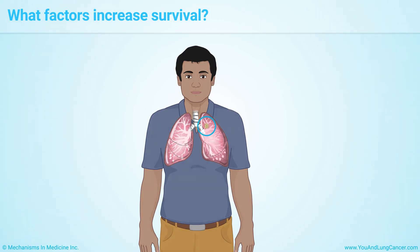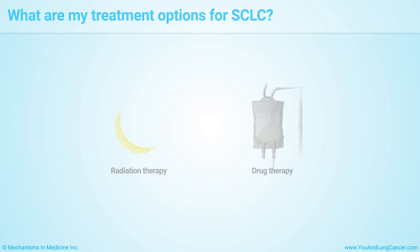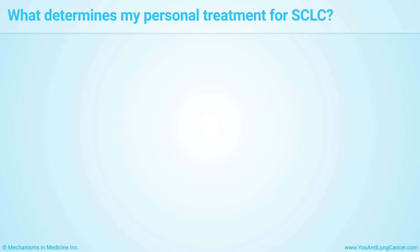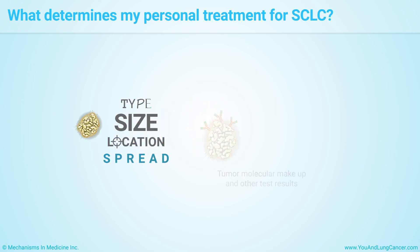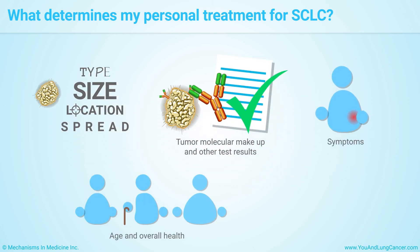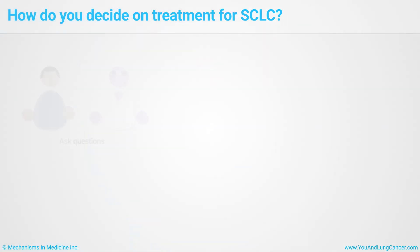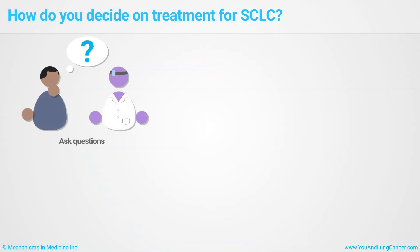Having a small cancer that hasn't spread outside the lung increases survival. The main ways to treat people with small cell lung cancer are radiation therapy and drug therapy. Which options are best for you will depend on factors like your tumor type, size, location, and spread, tumor molecular makeup and other test results, symptoms, age and overall health, and preferences. Your doctor will explain the recommended treatment options. Ask lots of questions, for example: what are the goals of this treatment, and what are its side effects?